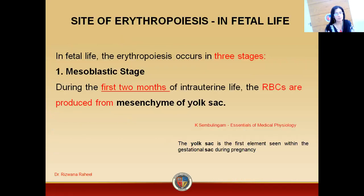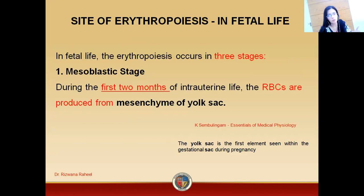In the mesoblastic stage, which is the first stage, this is a stage during the first two months of intrauterine life. In this stage, the RBCs are produced by the mesenchyme of the yolk sac.